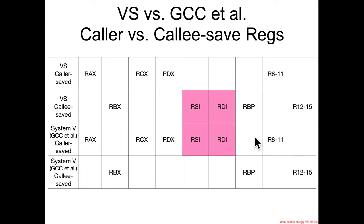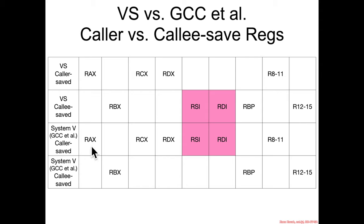Here's a visual representation of the different conventions in use. All registers are the same except RDI and RSI. Visual Studio has certain registers as caller-saved and others as callee-saved, and it's the same for System V derived ABIs. RAX is caller-saved, RCX is caller-saved, RDX is caller-saved — but they differ in terms of RSI and RDI.